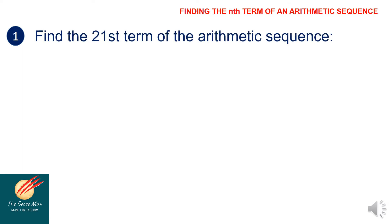Find the 21st term of the arithmetic sequence 6, 9, 12, and 15. First, let's identify a sub 1, our first term. Since the first term in the given is 6, we write a sub 1 is equal to 6.